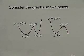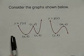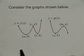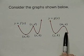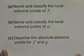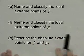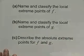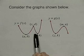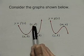Let's look at an example. We want to consider the graphs shown below. I have a function called f of x and here's its graph, and I have a function called g of x and this is its graph. We want to name and classify the local extreme points of f, name and classify the local extreme points of g, and describe the absolute extreme points for f and g. Let's look back at the graphs and establish what extreme points are. Extreme points are points that are called local minimum values or maximum values.